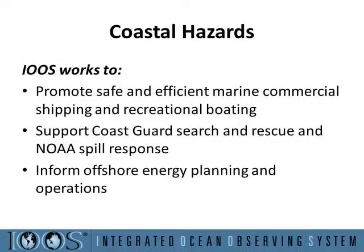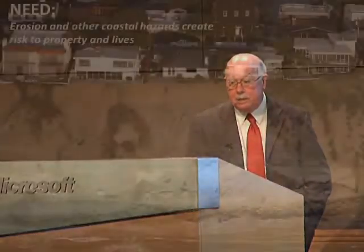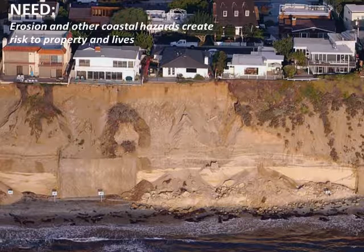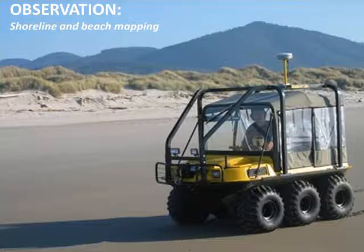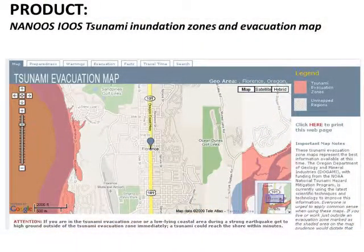Coastal hazards — we're well aware of what happened in Japan and the implications of the tsunami on our west coast. For coastal hazards, we support the Coast Guard for search and rescue, promote safe and efficient operations, and warn people. Here on the west coast, the impact of ocean waves, winter storms, and the gradual erosion has a profound effect on lives and property. IUSE can go out and measure changes and model the impact of local waves or distant waves from a tsunami. These types of data can be made available to the public in easily accessible forms — clearly a life or death kind of product.